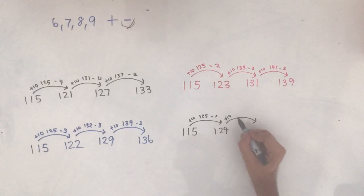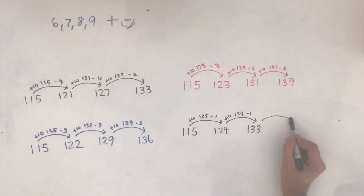124 add 10 is 134, minus 1 is 133. And 133 add 10 is 143, minus 1 is 142. So when adding 9, adding 10 and taking away 1 is probably the easiest strategy.